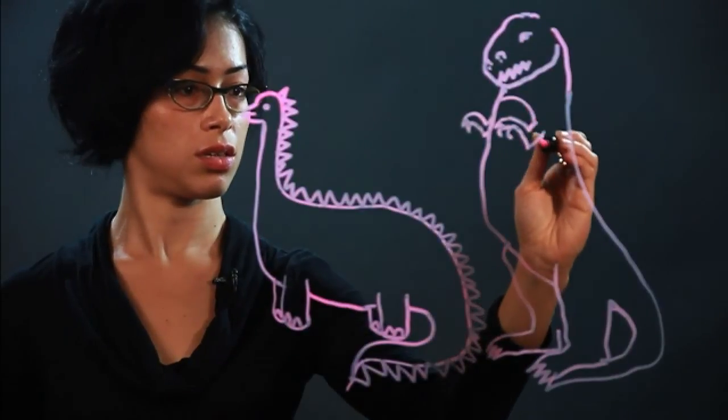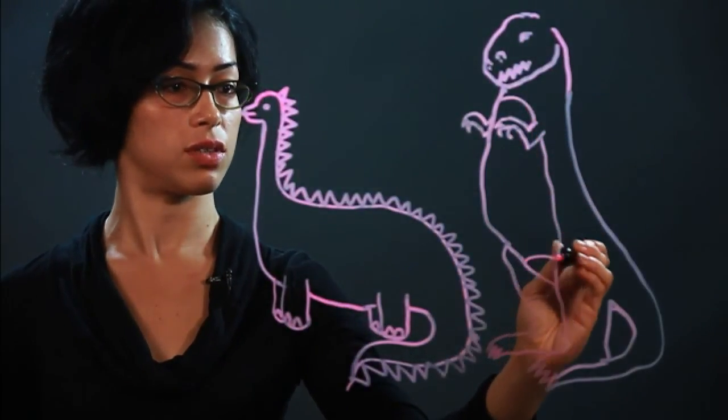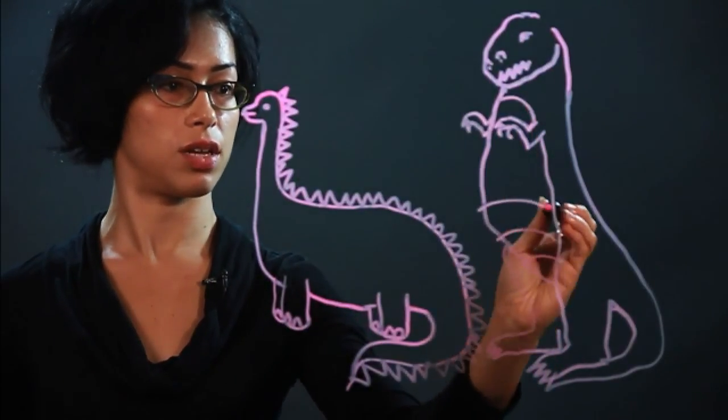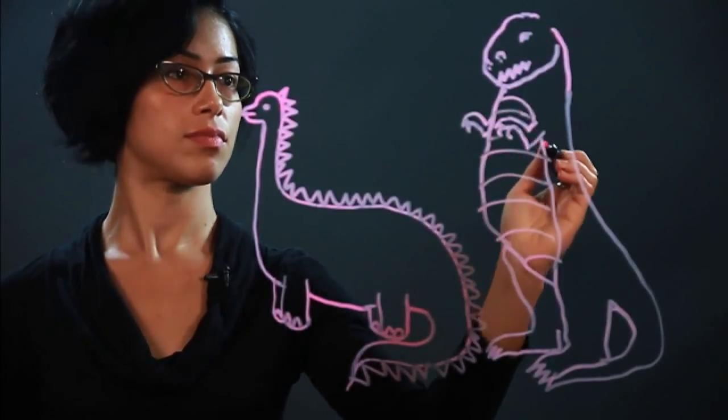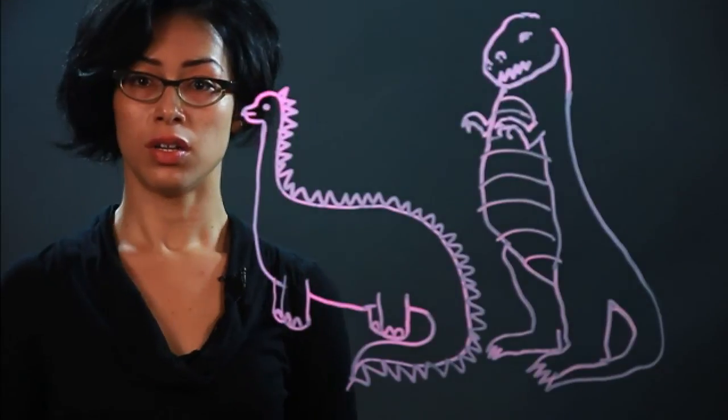And this is the belly. We're going to do some curved lines to show that it's round. And that is how you draw realistic dinosaurs.